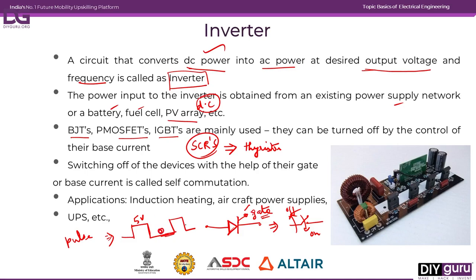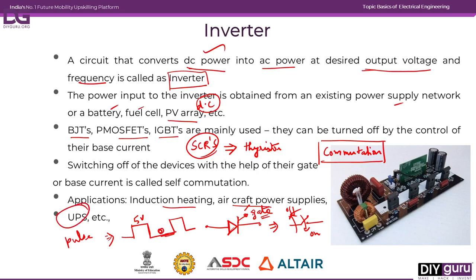Turning off this thyristor is not an easy task. If I bring this pulse signal to zero, this thyristor will not get instantaneously turned off, so you require additional circuitry for turning it off. The process of turning off is called commutation. The major applications of inverters include induction heating, temporary supply in aircraft power supply, and mainly home UPS systems.